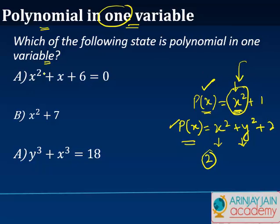What we need to find out is amongst these three scenarios which are given to us. Let's put this as c. We need to find out which of the following state is a polynomial in one variable.